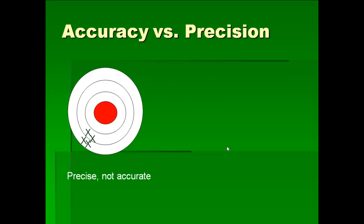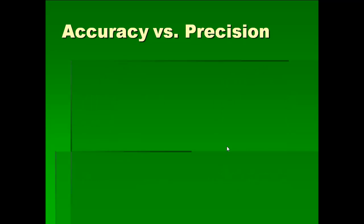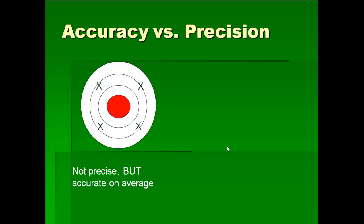Here we're shooting at a bullseye and we have precision — repeatability — but we're not accurate; we're not hitting where we're aiming. In this example, we're neither precise nor accurate — not hitting where we're aiming and hitting in a different place every time. Here is an example of how we can get accuracy with low precision; we're not hitting in the same spot, but on average these points would sort of be in the middle. The trick is you have to have a lot of points to potentially be accurate on average. Here, of course, is the ideal situation where we're both precise and accurate, hitting where we aim consistently.